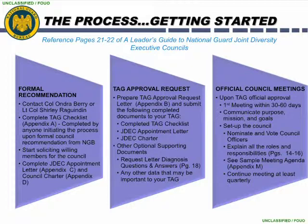Once your package is complete and submitted to the TAG for approval, it is time to take continuous action and start holding council meetings. Upon your TAG's official approval, the first meeting should be held within 30 to 60 days to communicate the purpose, mission, and goals of the council. In this initial meeting, you will set up the council by nominating and voting for council officers. Roles and responsibilities can be found on pages 14 through 16 of the JDEC guide, and a sample meeting agenda is in Appendix M. The goal is to continue meeting at least quarterly, working towards NGB goals found in Appendix F, educating organizations on diverse issues affecting the global mission. This requires established leadership engagement, timely execution, and commitment to ensure your council is effective.